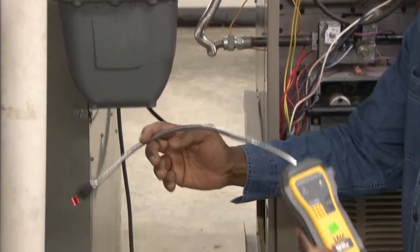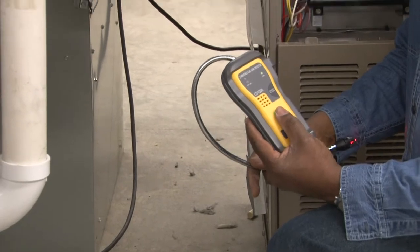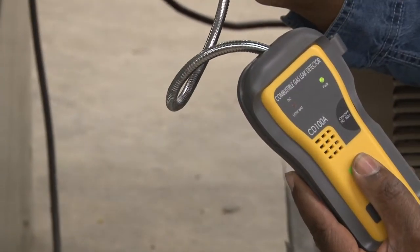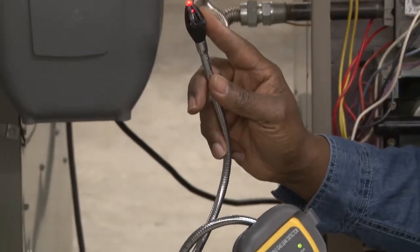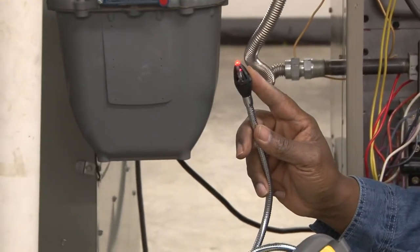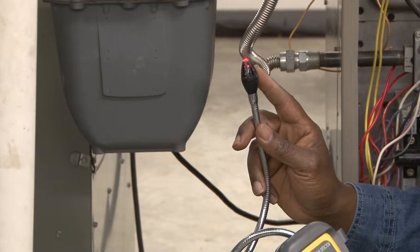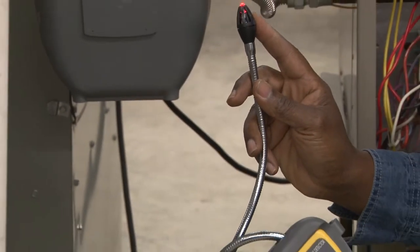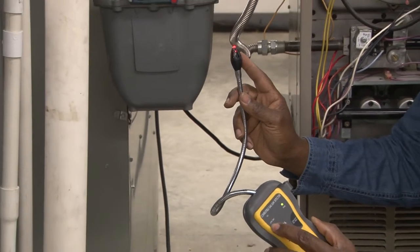This is an electronic leak detector. This electronic leak detector has a pump built into it and senses when there's natural gas or combustible type gases. It will make an audible sound and a flashing light to determine where the leak is at.